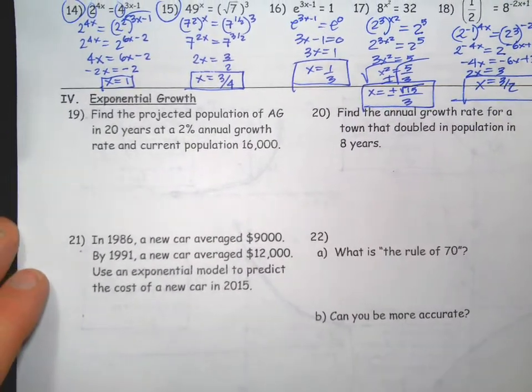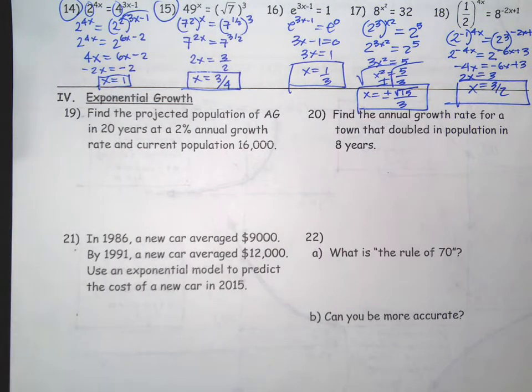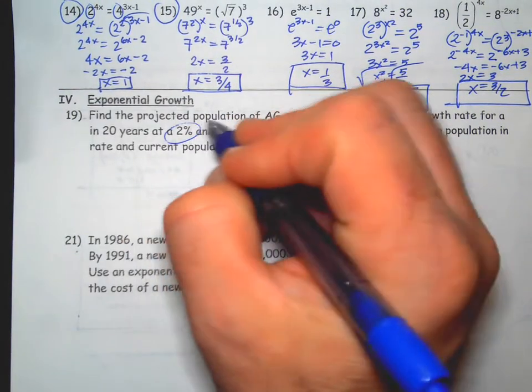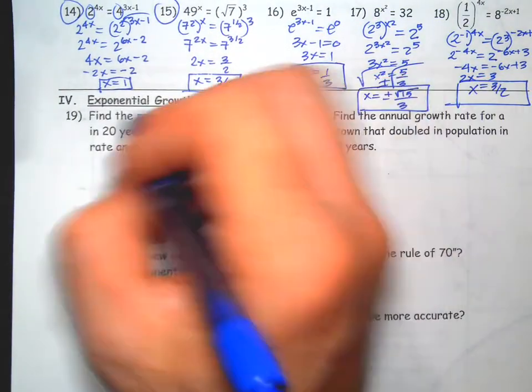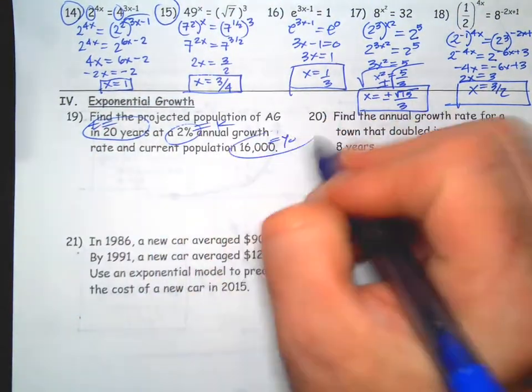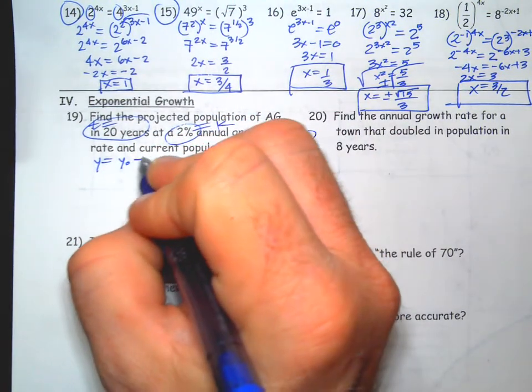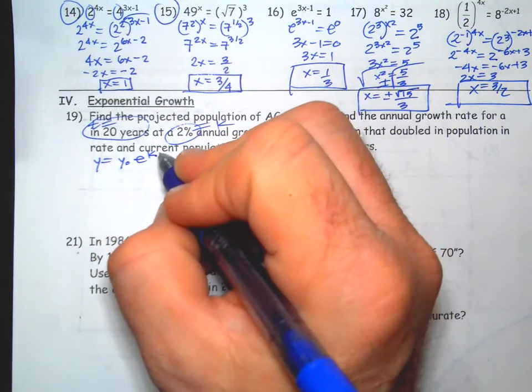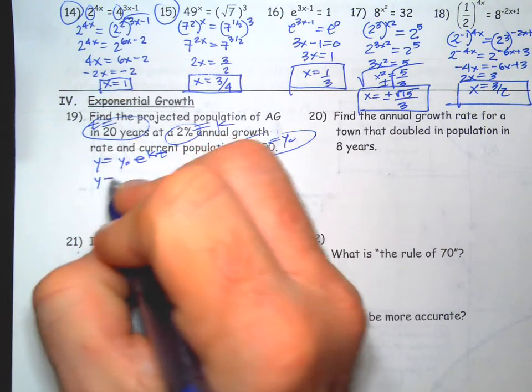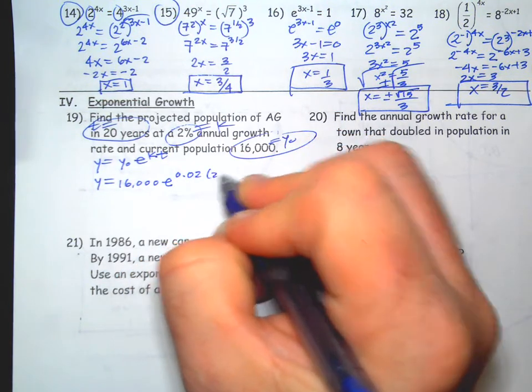A couple of work problems. Find the projected population AG in 20 years at a 2% annual growth rate and current population is 16,000. So this is your k value, this is your time, this is your current population y sub 0. The equation you can just use is y equals y sub 0 e to the kt.